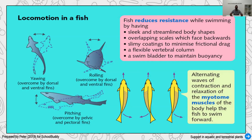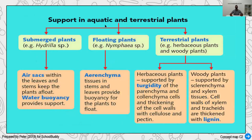Next, we see adaptations in plants — both aquatic and terrestrial. For aquatic submerged plants, such as hydrilla, they have air sacs to keep them afloat and maintain buoyancy. For floating plants on the water surface, such as pistia, they have a tissue called aerenchyma in their stems and leaves that provides buoyancy, allowing them to float and move across the water surface.